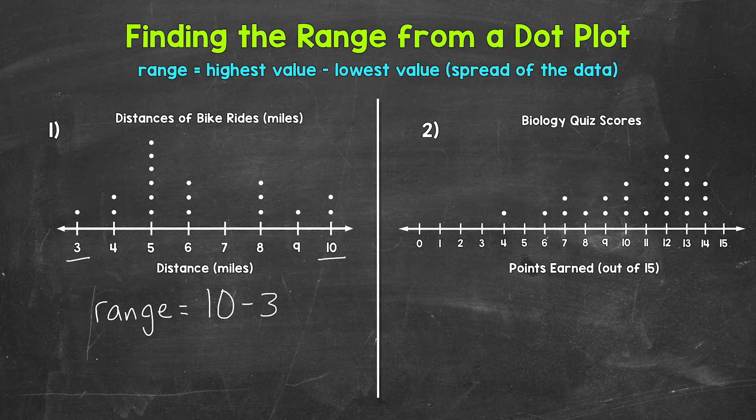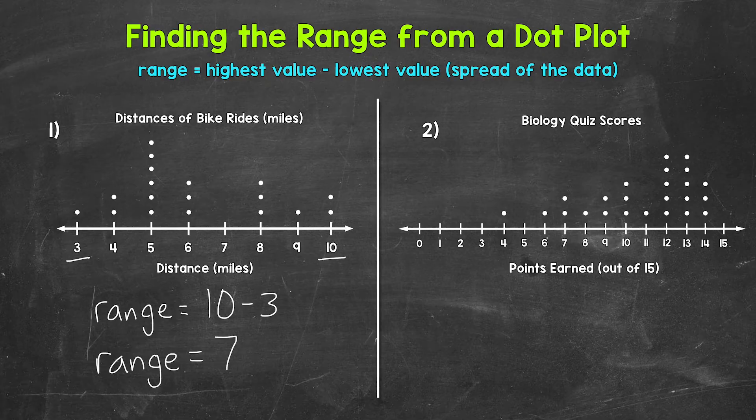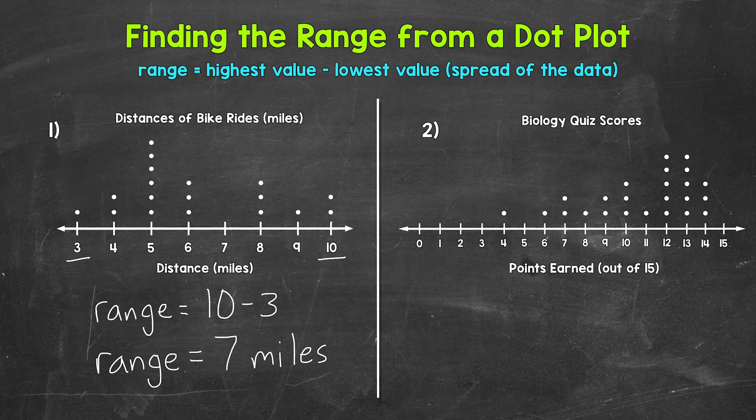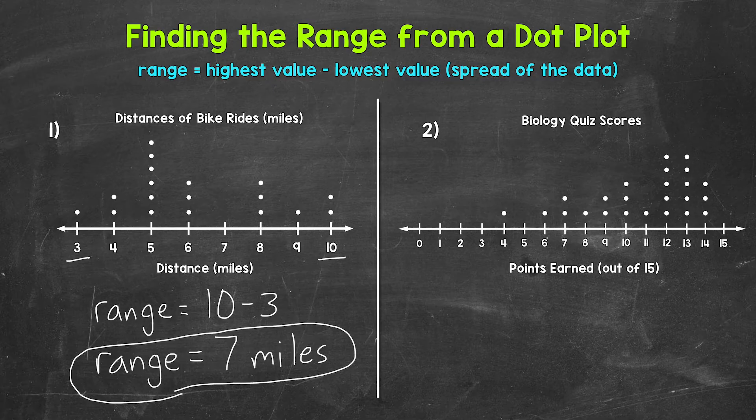10 minus three gives us a range of seven, and we can label this miles, since that is what we are working with. So our range is seven miles. So that's the spread, the range of the data. The data goes from the shortest distance of three miles to the longest distance of 10 miles.